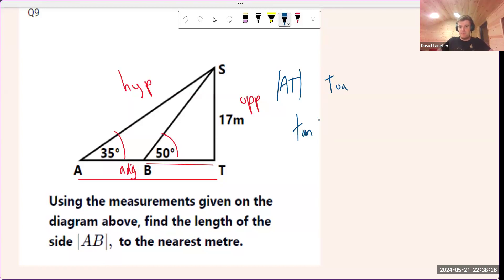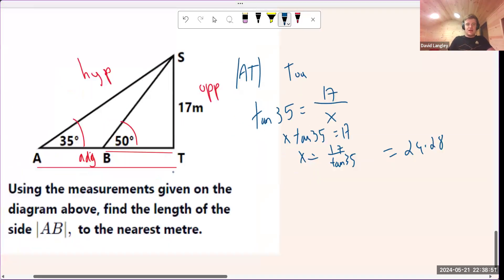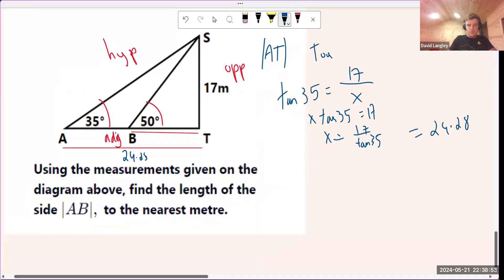And so it'd be tan 35 equals opposite 17 over adjacent, which I will just call x. And so I'm going to have x tan 35 equals 17, x equals 17 over tan 35, which is approximately, and I'll go like two decimal places here, 24.28. So that whole thing is 24.28.